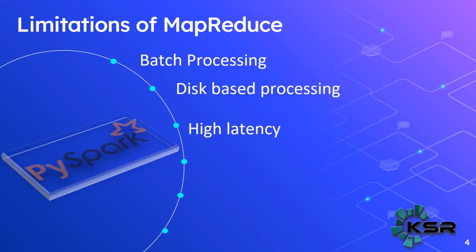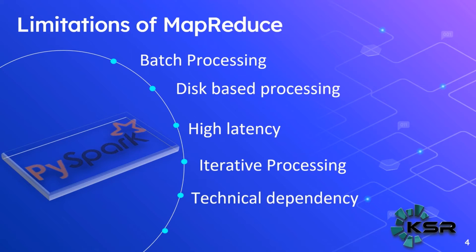High latency means you can only read high volumes of historical data at a time, so Hadoop is suitable for high latency data. Another limitation is iterative processing — any repetitive or recursive computation takes a lot of time in MapReduce. Also there is technical dependency: only Java developers can use MapReduce, and you have to write a lot of lines of code — for the mapper, reducer, and shuffle-sort phases separately, all in Java.